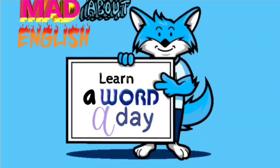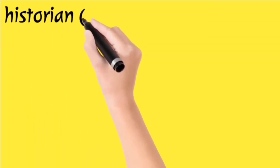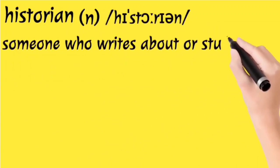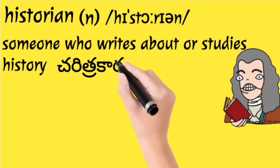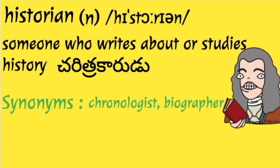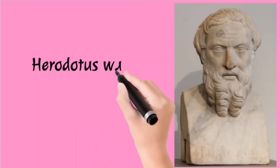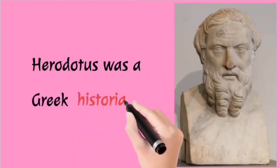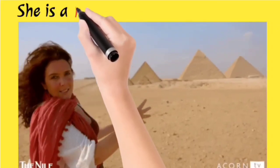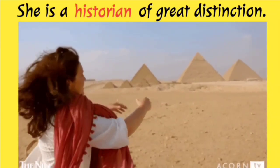Hello dear ones, welcome back to Mad About English. Today's word is 'historian' — it's a noun. Someone who writes about or studies history. The synonyms are chronologist and biographer. Let's see its uses: Herodotus was a Greek historian. Next one: she's a historian of great distinction.